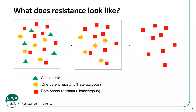What does resistance look like in practice? In a hypothetical colony: green triangles represent susceptible rodents, orange arrows represent rodents with one resistant parent and one susceptible parent (heterozygous), and red squares represent rodents where both parents carry the mutation. If you use FGAs to start treatment, you'd wipe out all the susceptible ones — all the triangles — but leave both resistant groups behind.